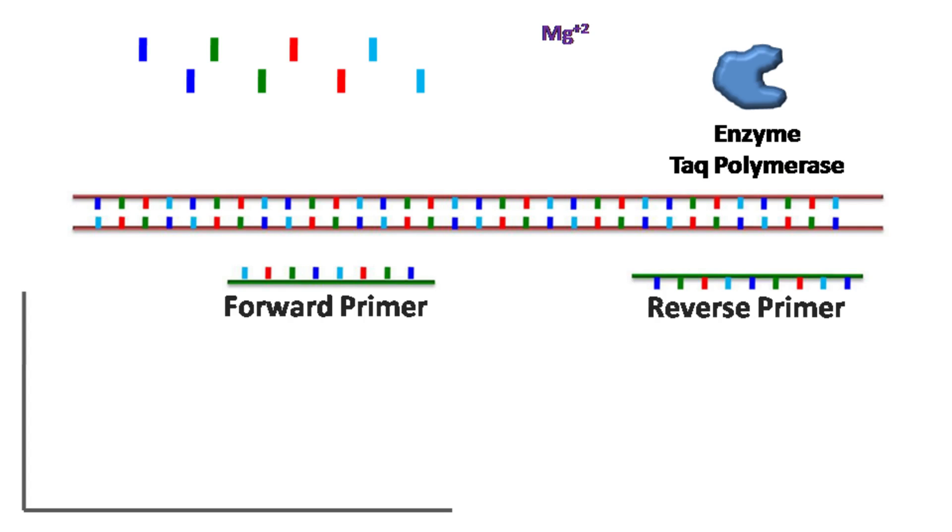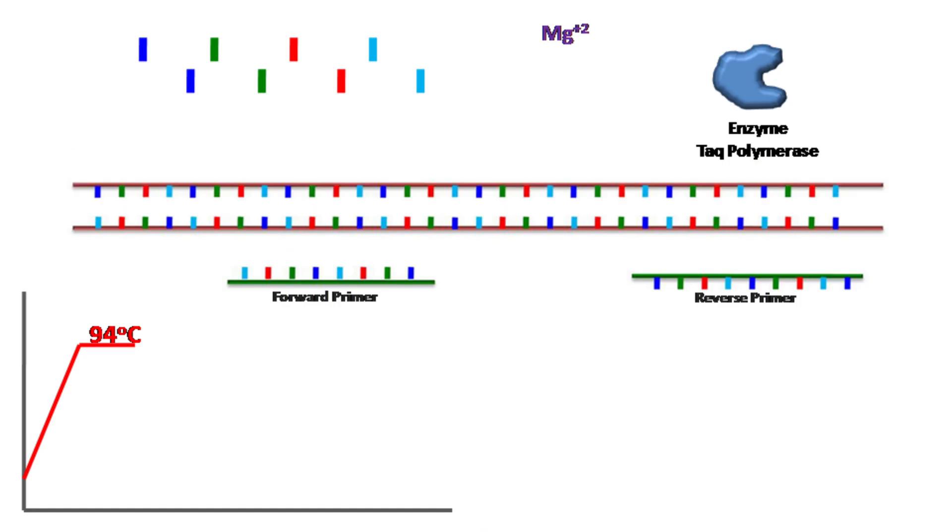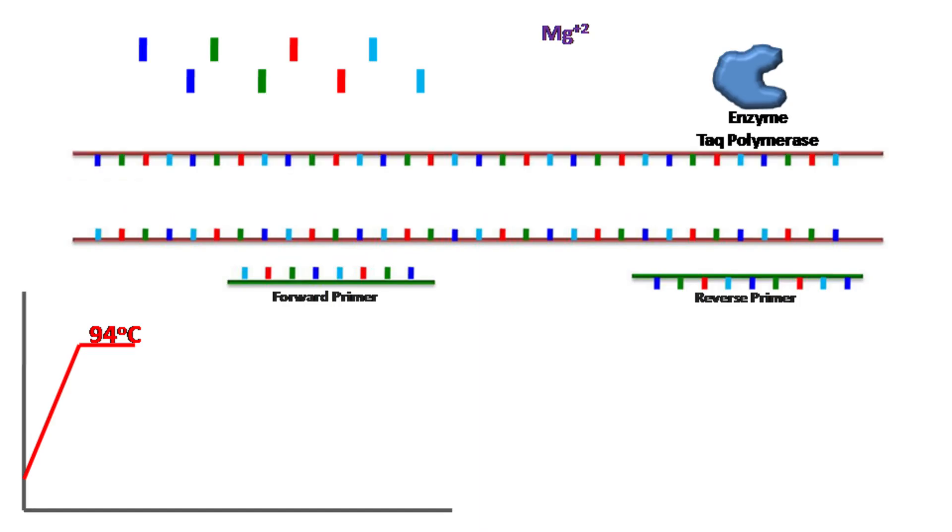The PCR reaction consists of three main cycles. In the first cycle, the system is heated at 94 degrees Celsius temperature, which separates the two template DNA strands. The separation of DNA strands occurs because of the breakage of hydrogen bonding between the strands because of high temperature.